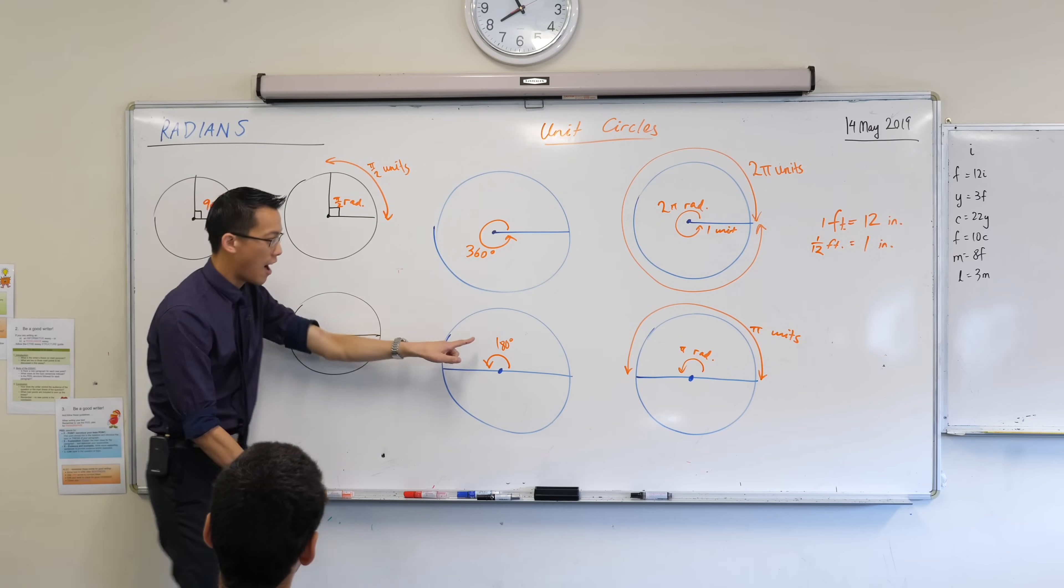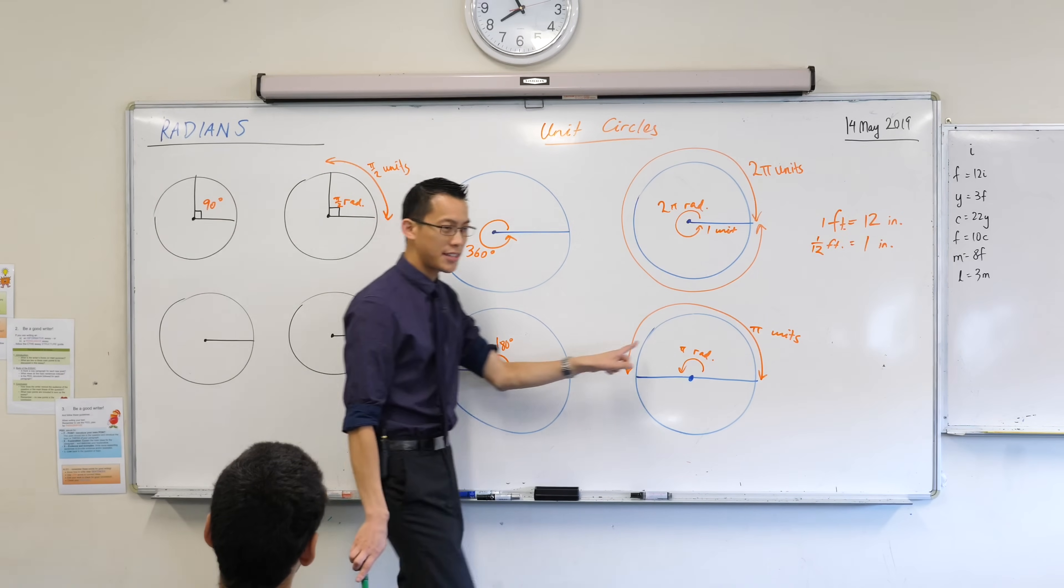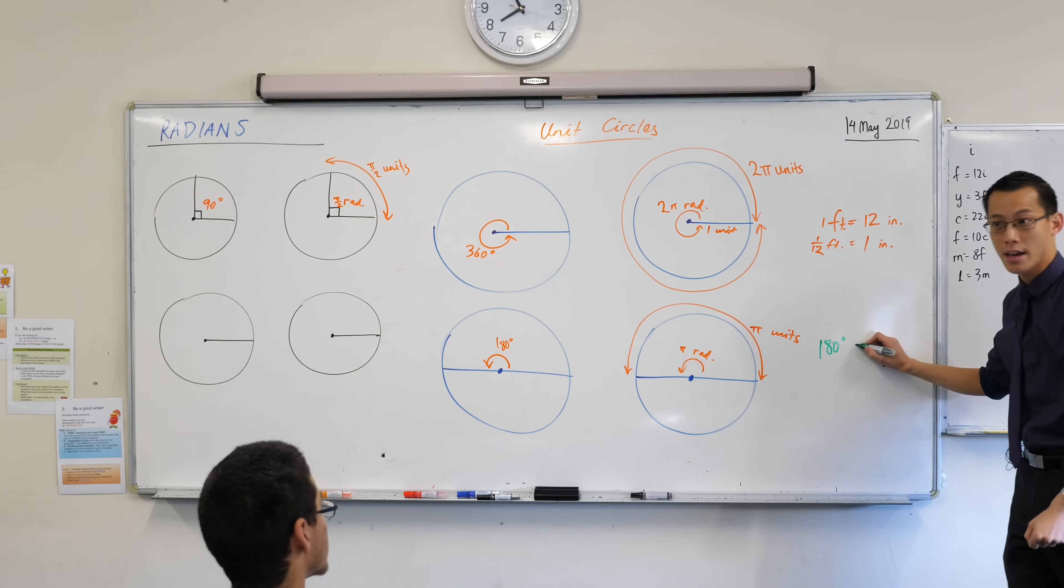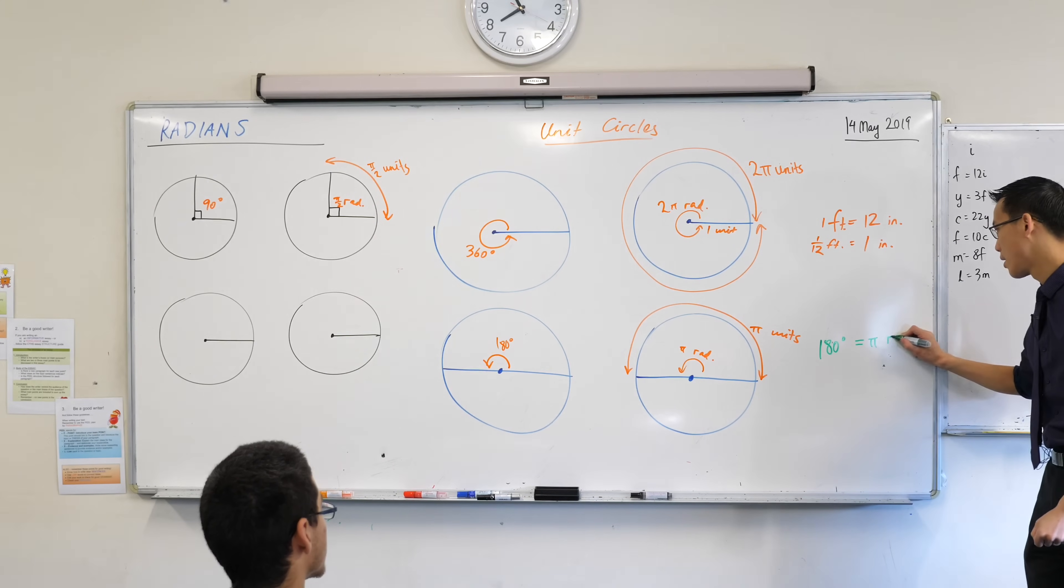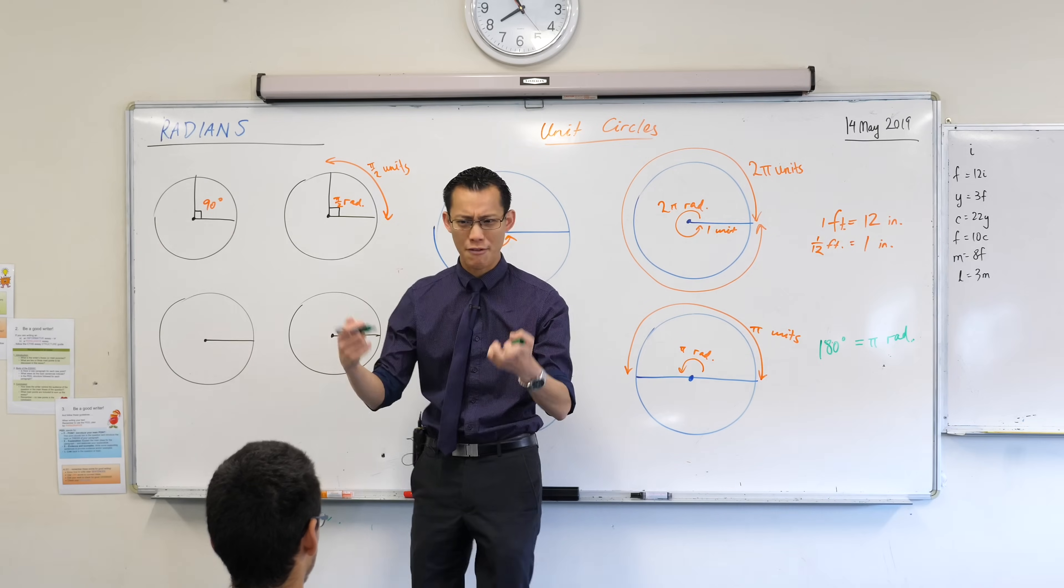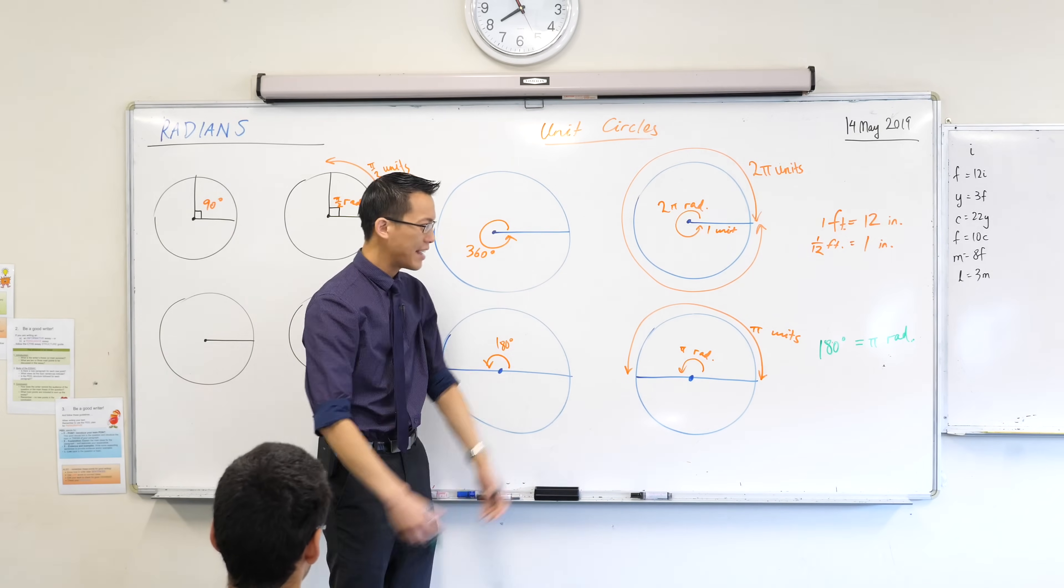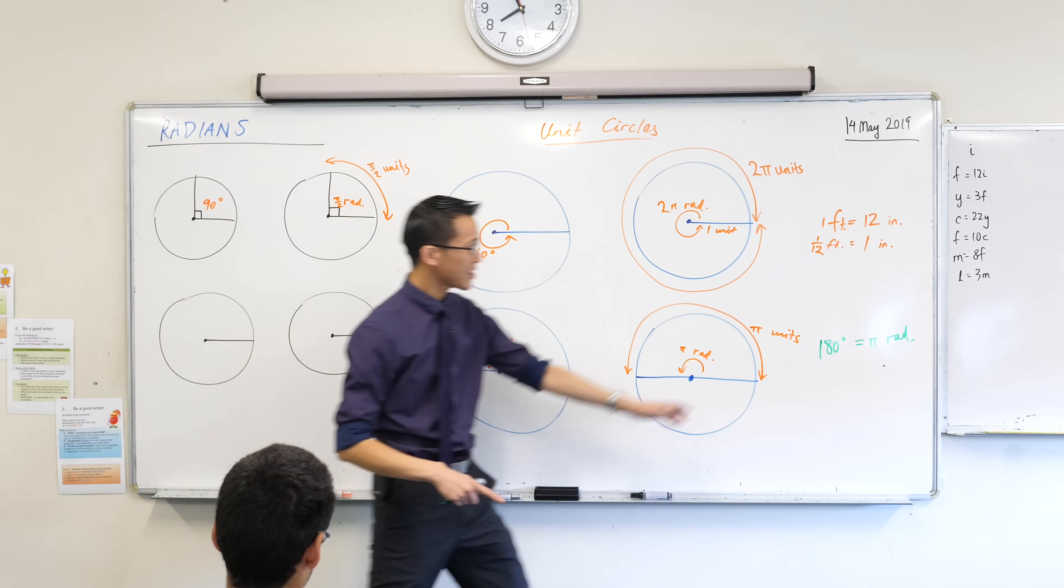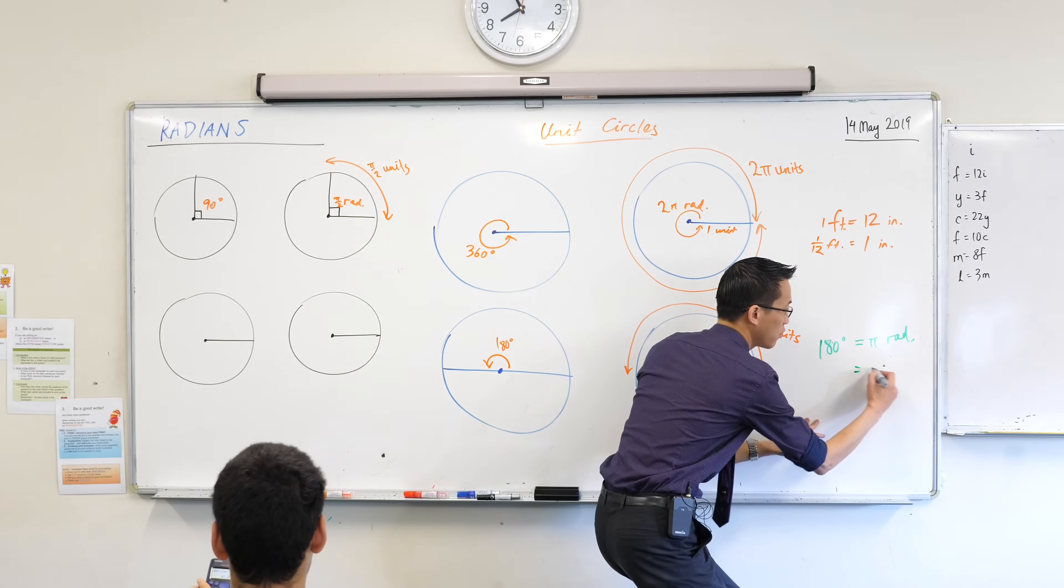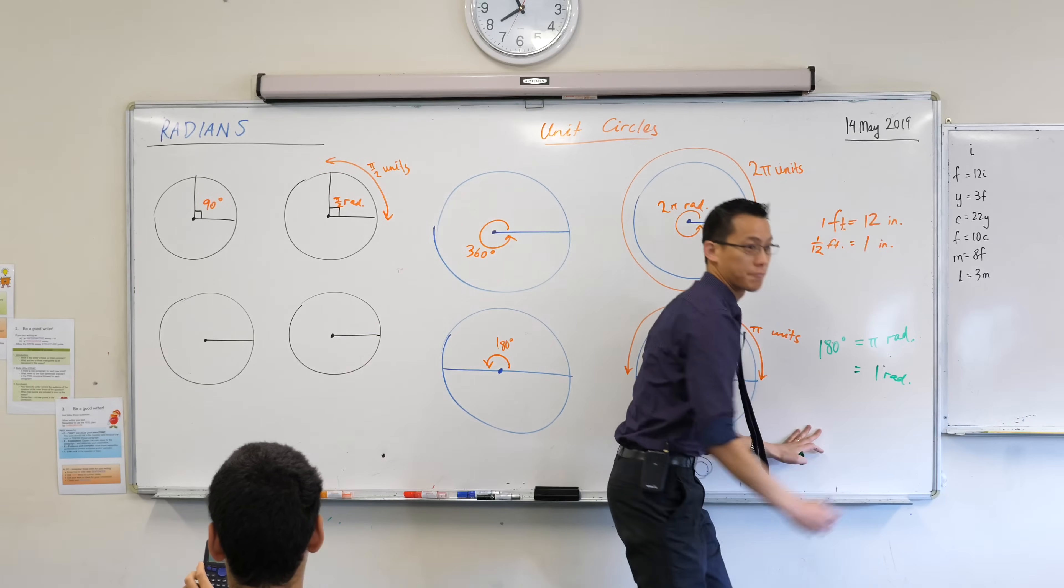If you've got 180 degrees being the same as pi radians, that's actually worth writing down. 180 degrees equals pi radians. If I didn't want pi radians, that's about three and a bit. I just want one of them. Just like here, what should I do to both sides? I should divide by pi. That'll give me one radian.